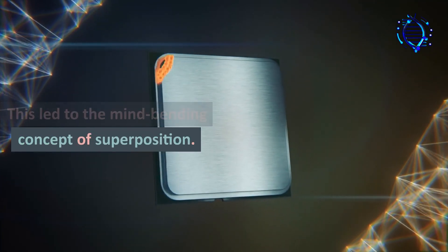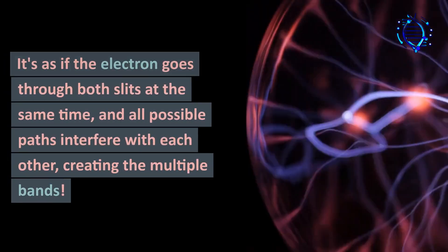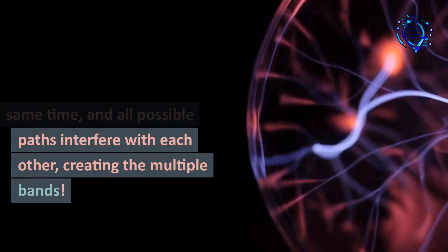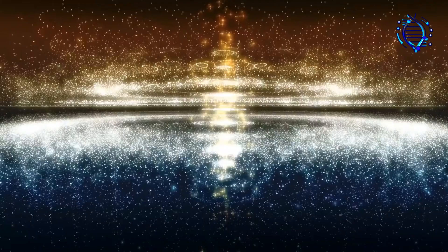Surprisingly, even when they fired electrons one at a time, the result was still the same. This led to the mind-bending concept of superposition. It's as if the electron goes through both slits at the same time, and all possible paths interfere with each other, creating the multiple bands.